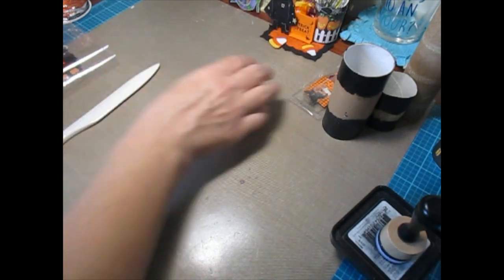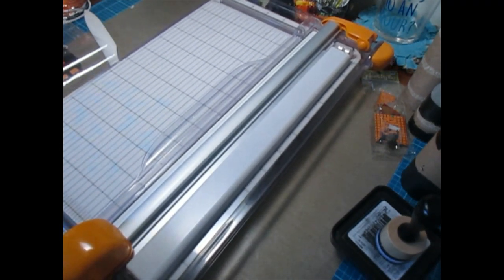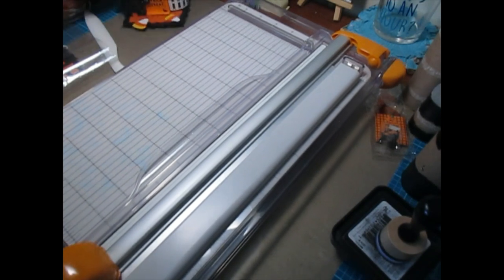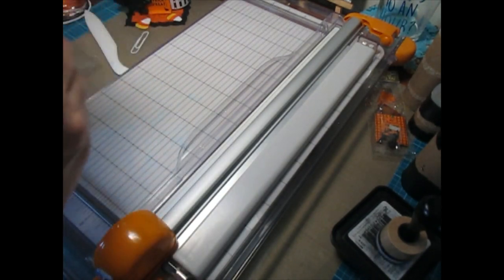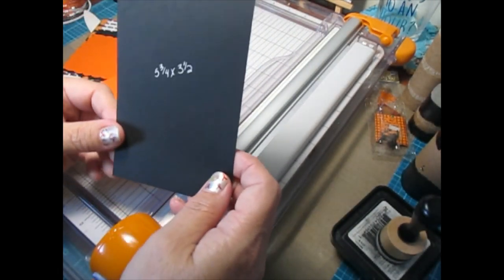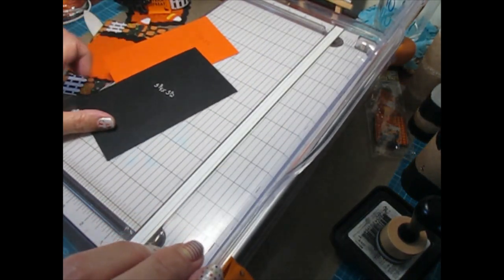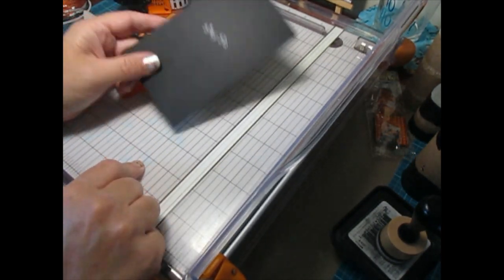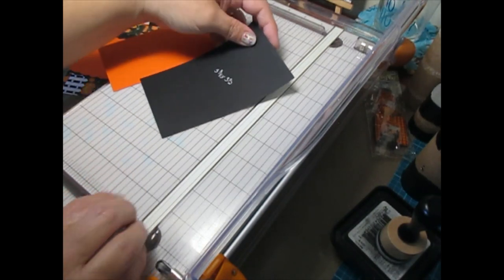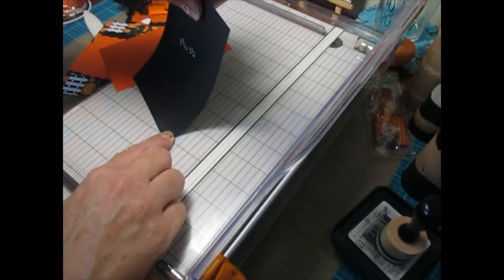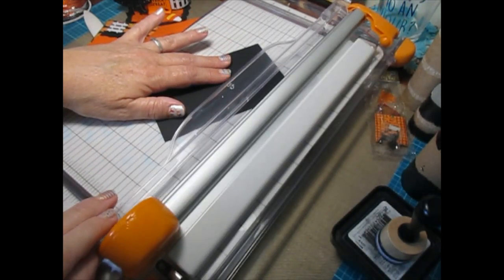So for the tag, my first piece was 5 3/4 by 3 1/2. I lined this point up here, the right side, with the 2 inch mark. Then you're going to take the point up top and line it up past your cut line to the 1/2 inch mark to create your tag.